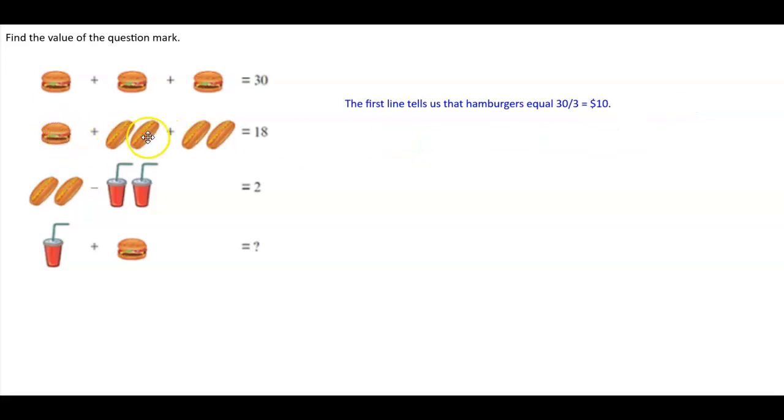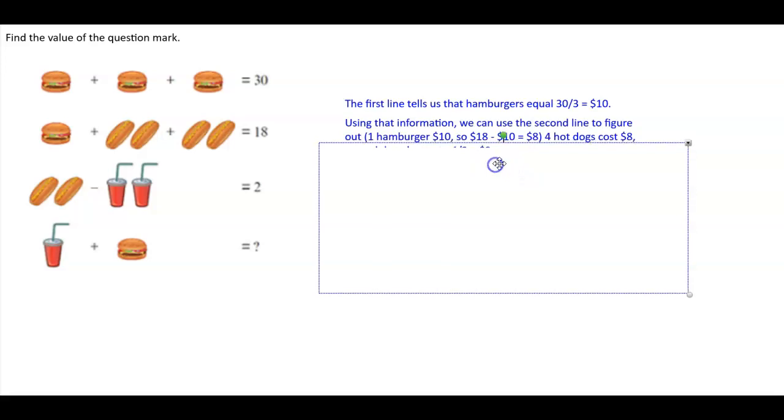Next line we have a hamburger plus two hot dogs plus two hot dogs equals $18. So one hamburger costs $10. So 18 minus 10 is $8.